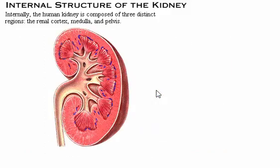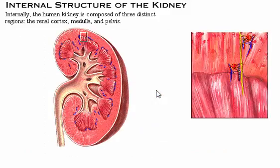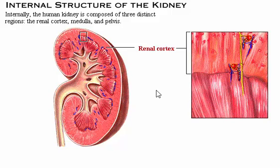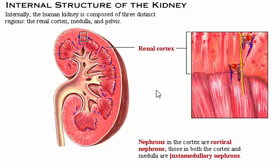Internally, the human kidney is composed of three distinct regions. The first region is the outermost layer called the renal cortex. It contains about one million nephrons, the filtering units that form urine. Some of these nephrons lie completely within the cortex and are called cortical nephrons.